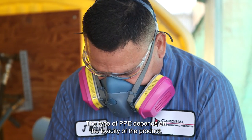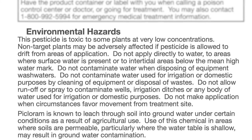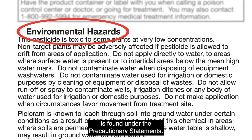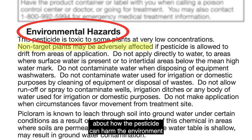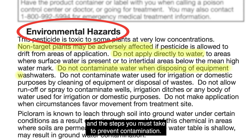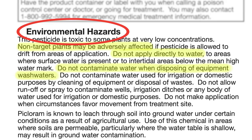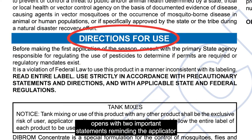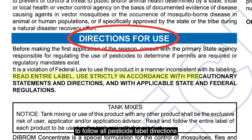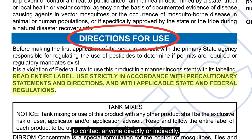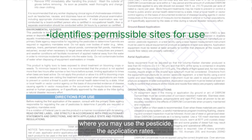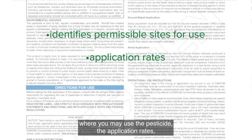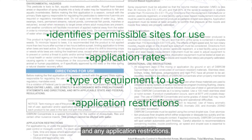The type of PPE depends on the toxicity of the product. The environmental hazards statement is found under the precautionary statements and gives you information about how the pesticide can harm the environment and the steps you must take to prevent contamination. The directions for use section opens with two important statements reminding the applicator to follow all pesticide label directions and not to allow the pesticide to contact anyone directly or indirectly. This section identifies the sites where you may use the pesticide, the application rates, the type of equipment to use, and any application restrictions.